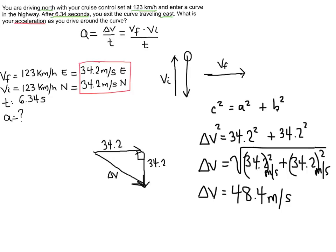Now that we know delta v I can take delta v and this value and I could plug it back up here into the equation. So let's go ahead and do that and we end up with 48.4 meters per second divided by the time which was 6.34 seconds. We end up with an acceleration of 7.63 meters per second squared.